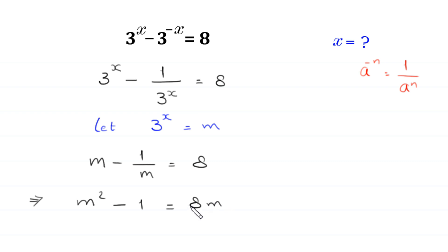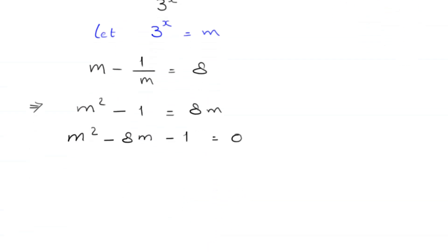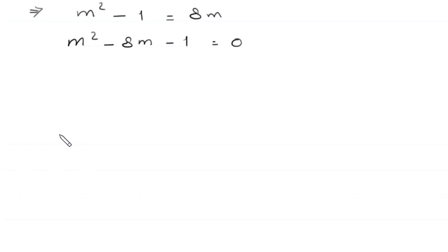We move this 8m to the left side, and this equation will become m squared minus 8m minus 1 is equal to 0. This is a quadratic equation and it is not factorable, so we solve it by the quadratic formula.